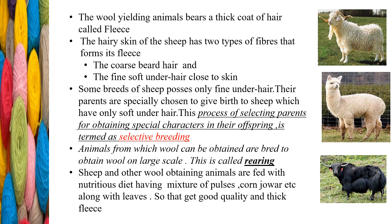Sheep and other wool-yielding animals are herbivores — they feed on grass and leaves. Apart from this, they are also given a nutritious diet like mixtures of pulses, corn, jowar, etc., so that they develop good quality and thick fleece. Now we'll move on to see the production of wool.